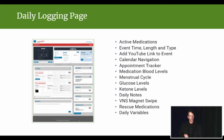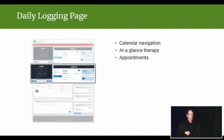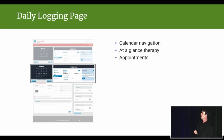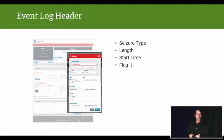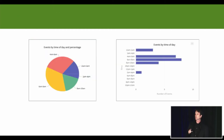We include a bunch of tools on the website, including a rescue medication tool and an appointment tool. If you're making appointments with doctors or therapists, you can log them in here. We have a contact manager that you can take notes of phone calls you've had and mark those with times and dates. The seizure logging itself is broken down into four sections: a header section that allows you to record seizure types, the length, the time, and then you can flag seizures.